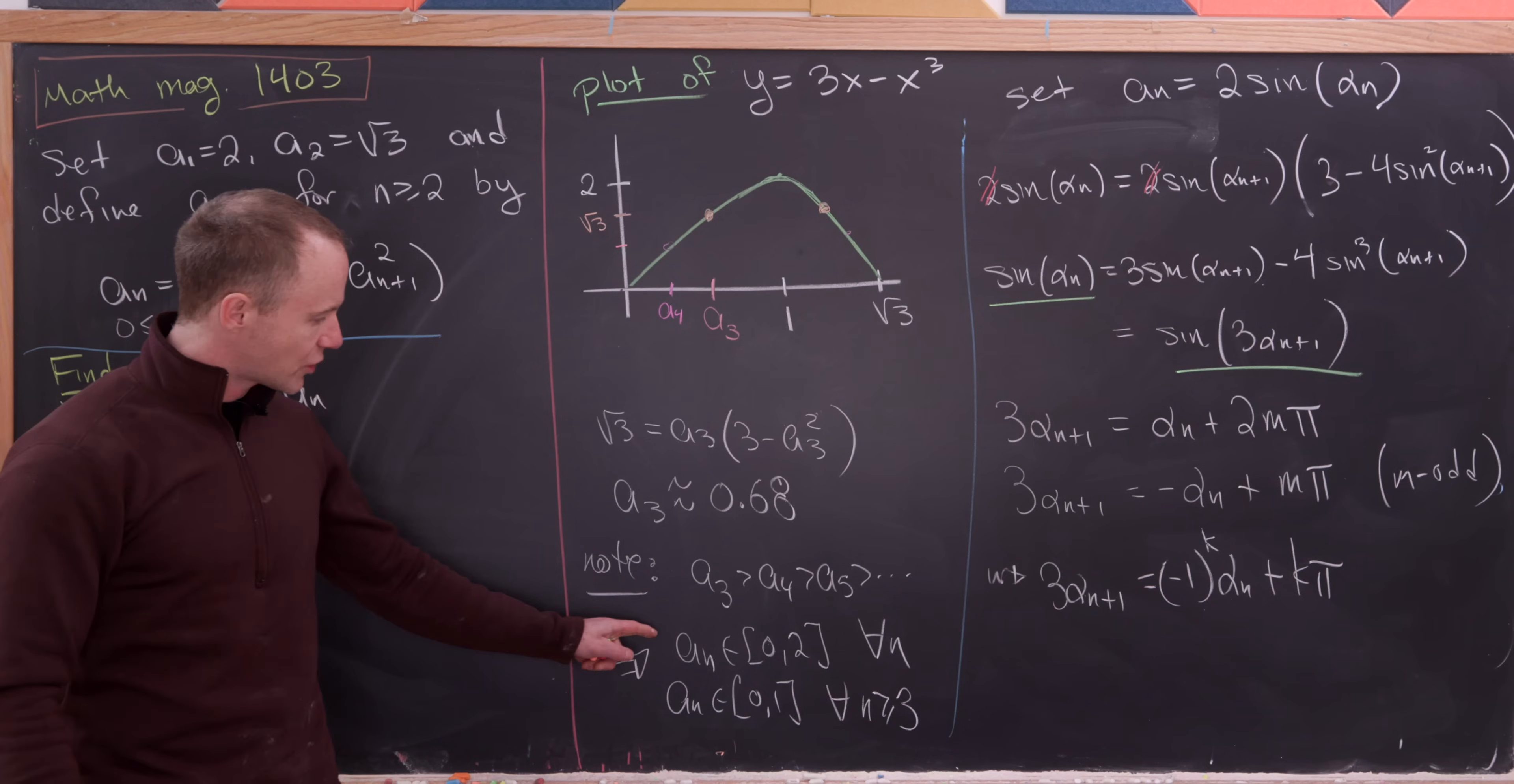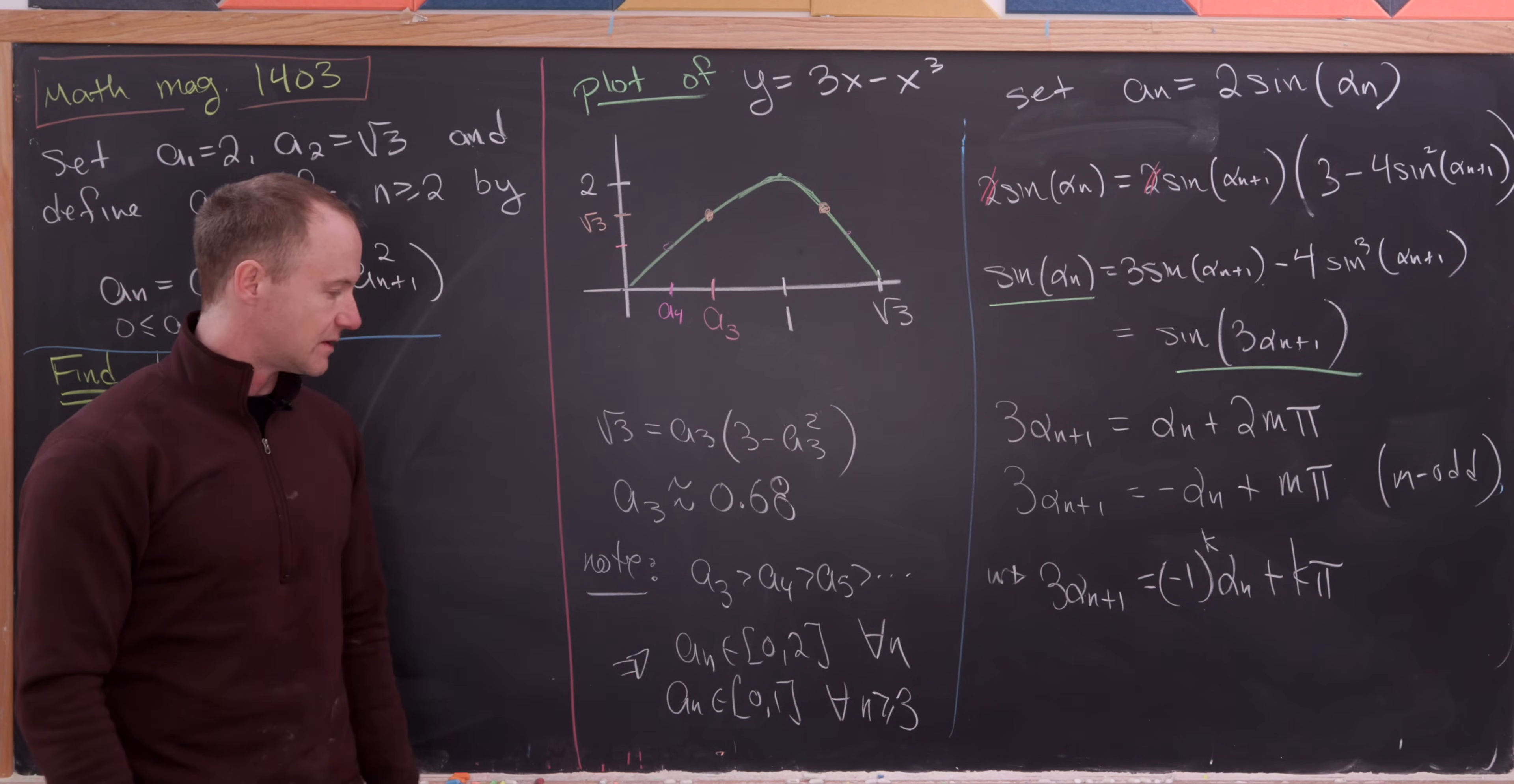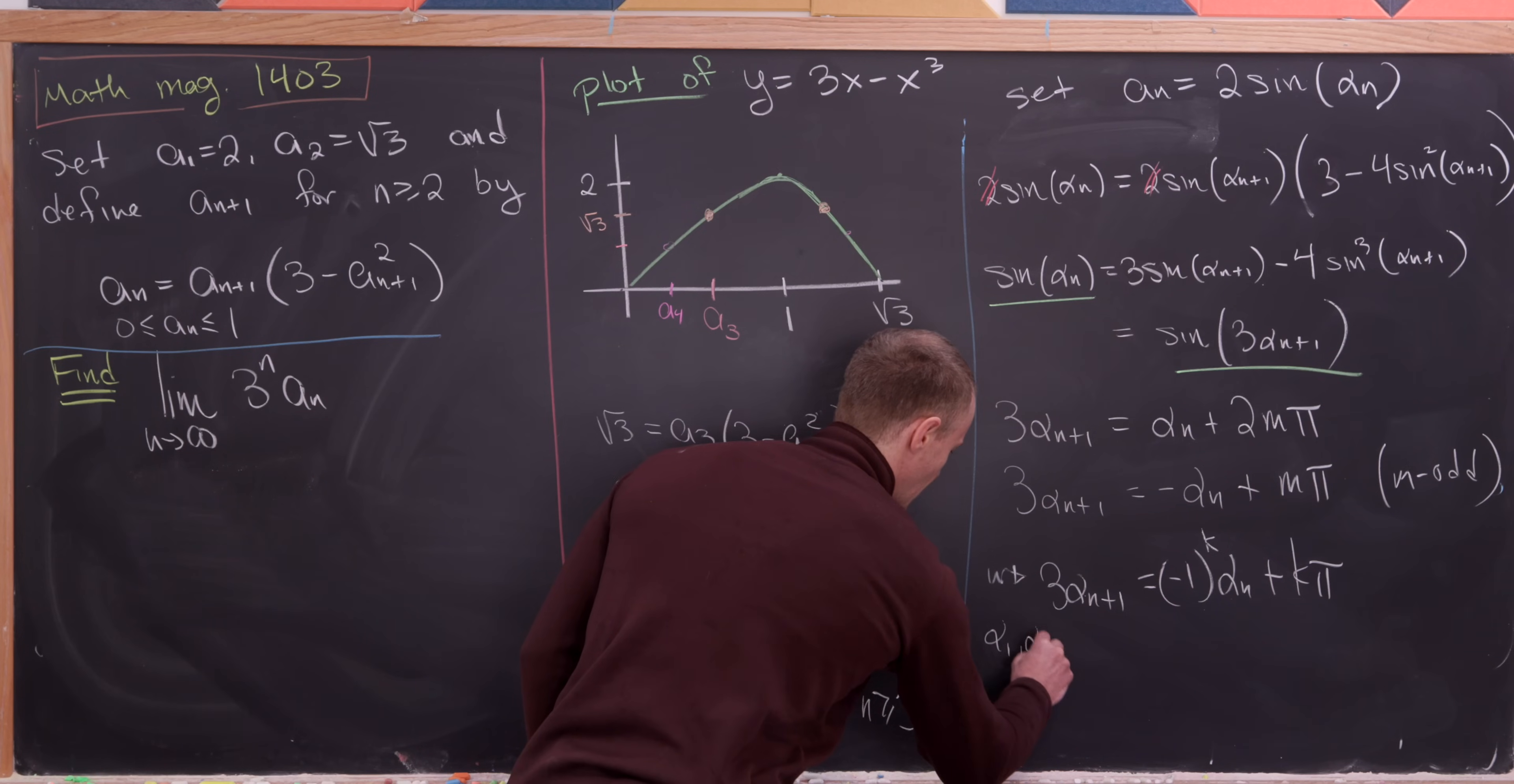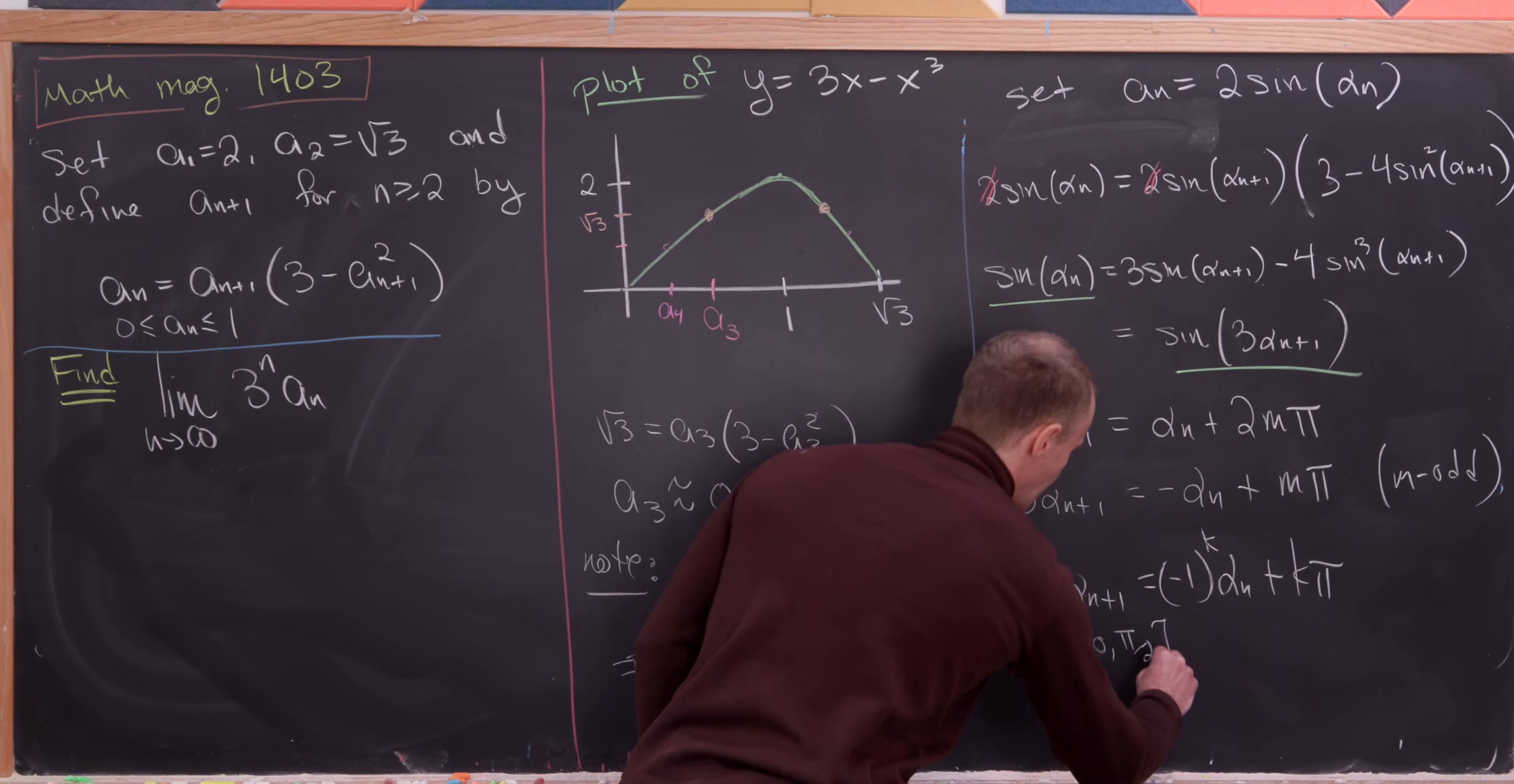But now we can go over here to our restrictions on a sub n and observe that a sub n being between 0 and 2 for all n. So that tells us that alpha 1 and alpha 2 can be chosen from 0 to pi over 2.